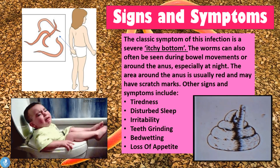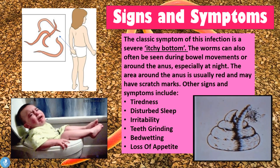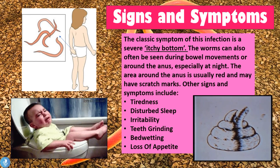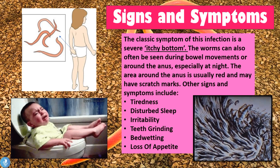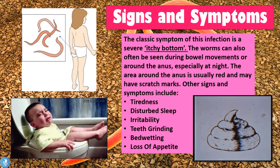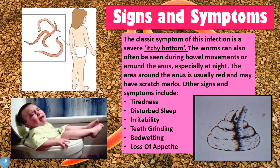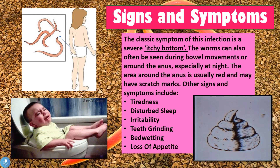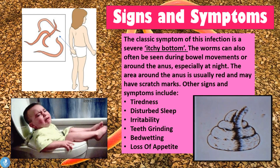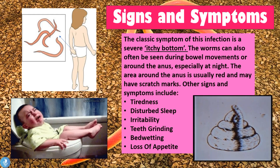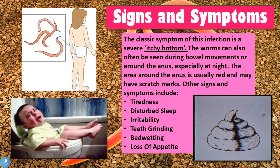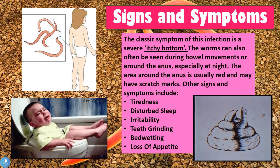The area around the anus is usually red and may have several scratch marks. Some other signs and symptoms of this disease include tiredness, disturbed sleep, irritability, teeth grinding, bed wetting, and loss of appetite.